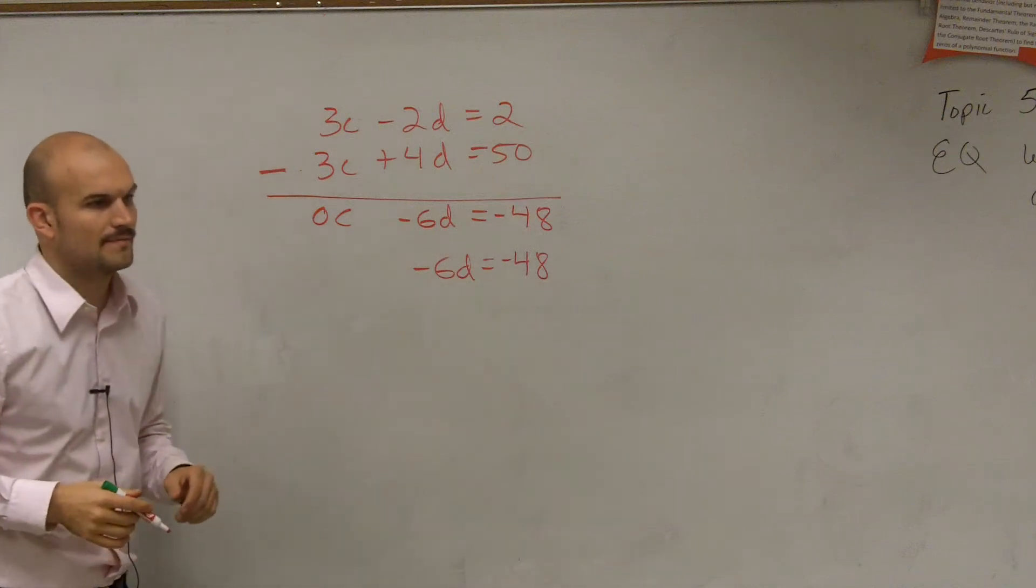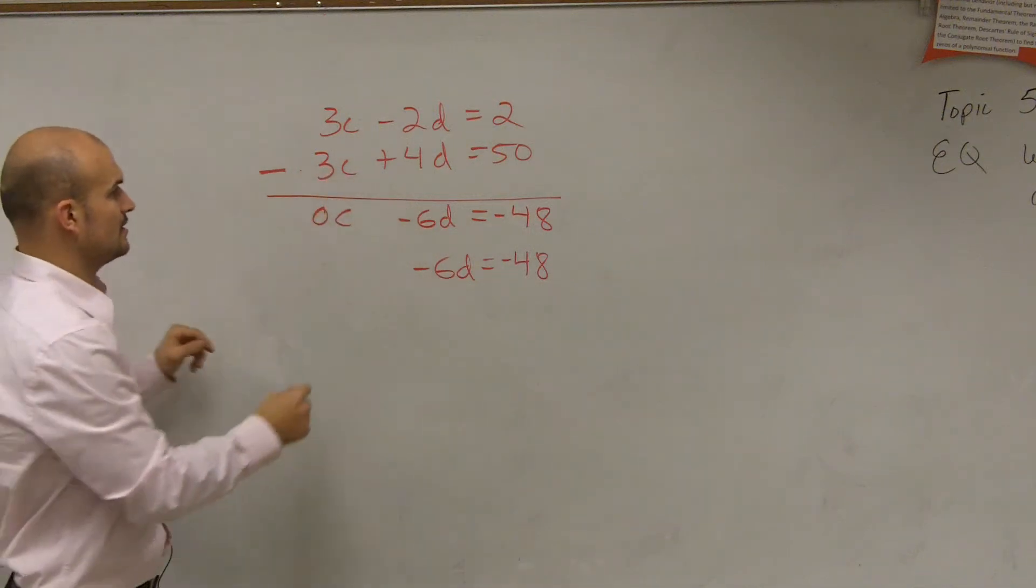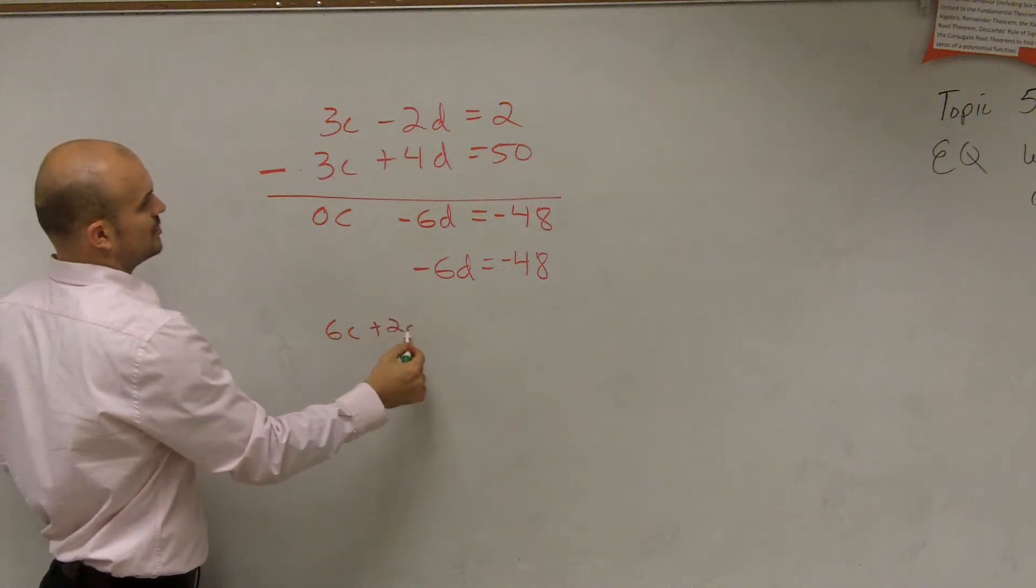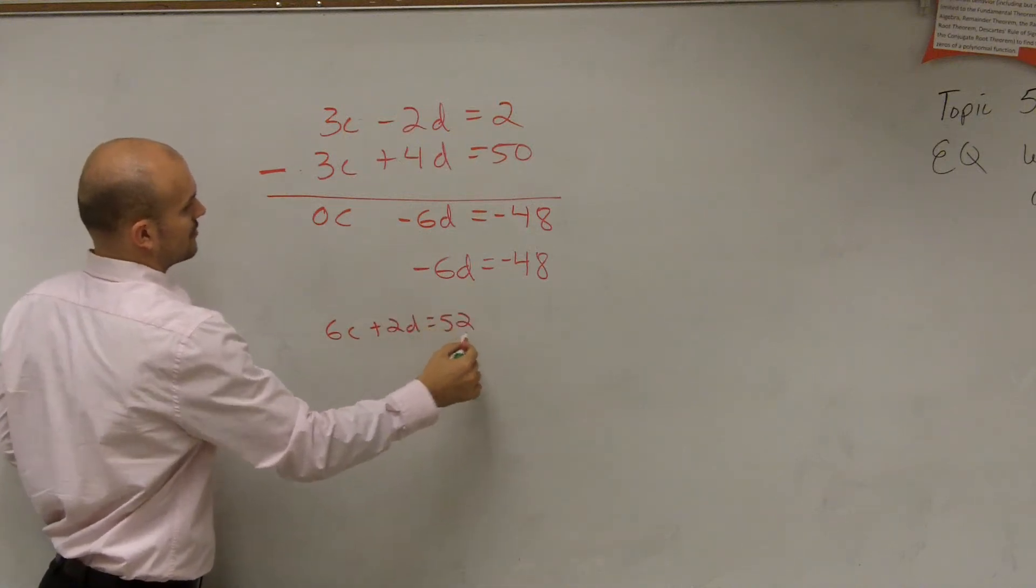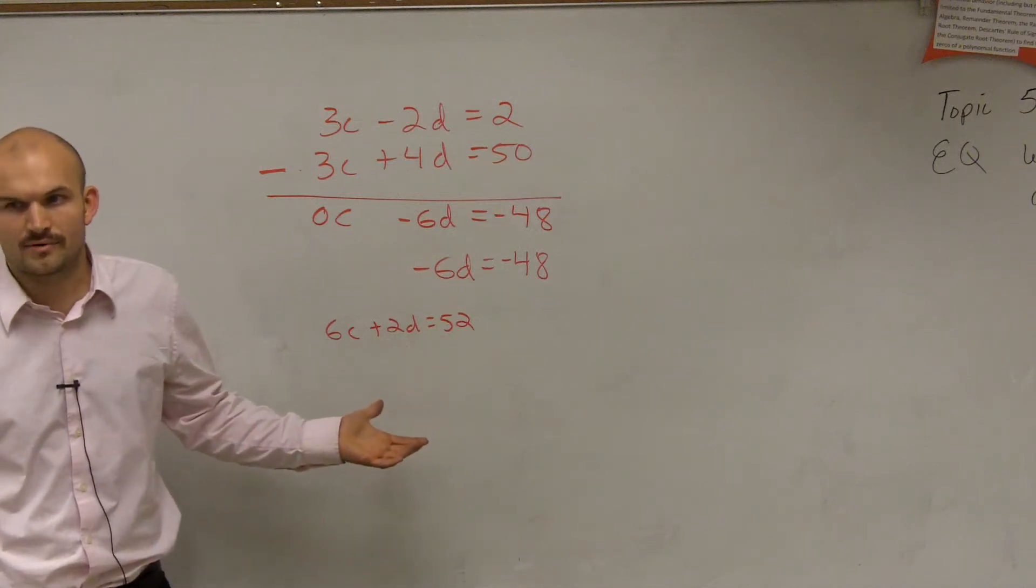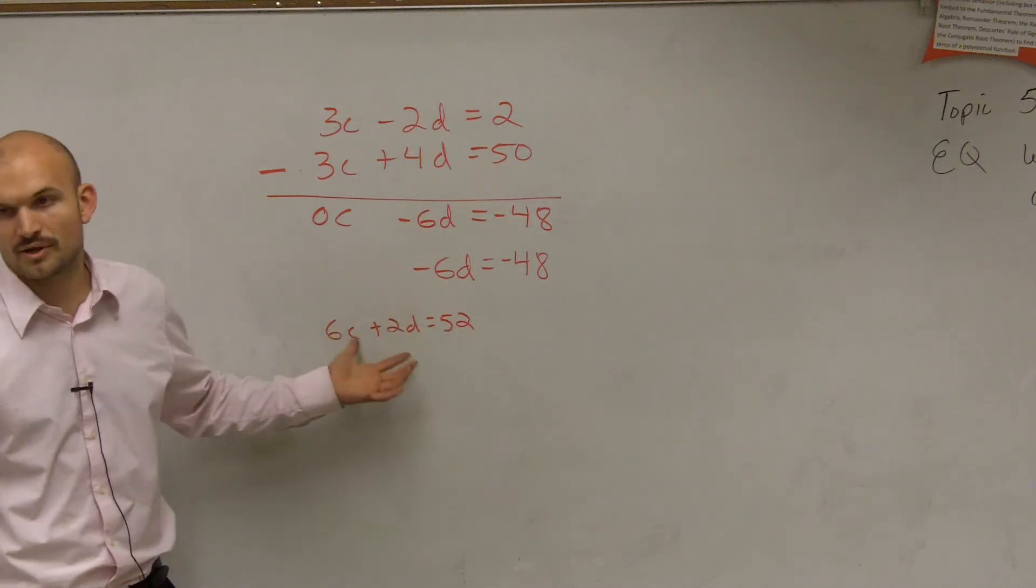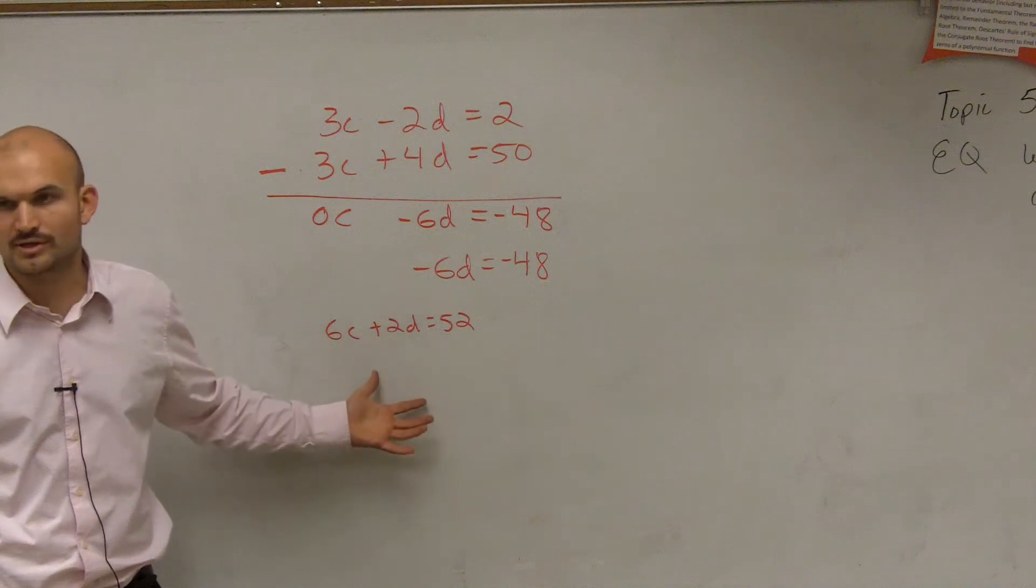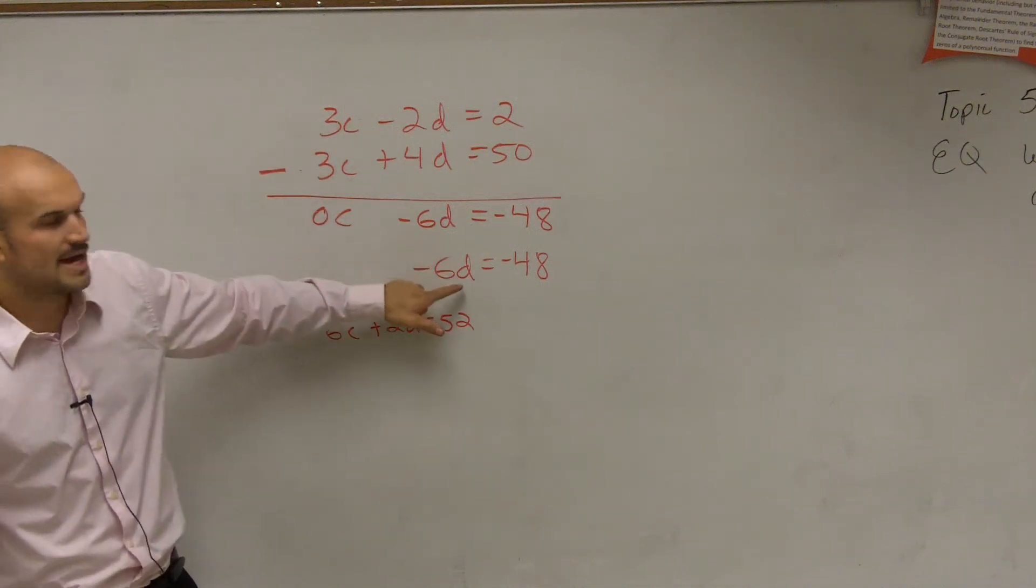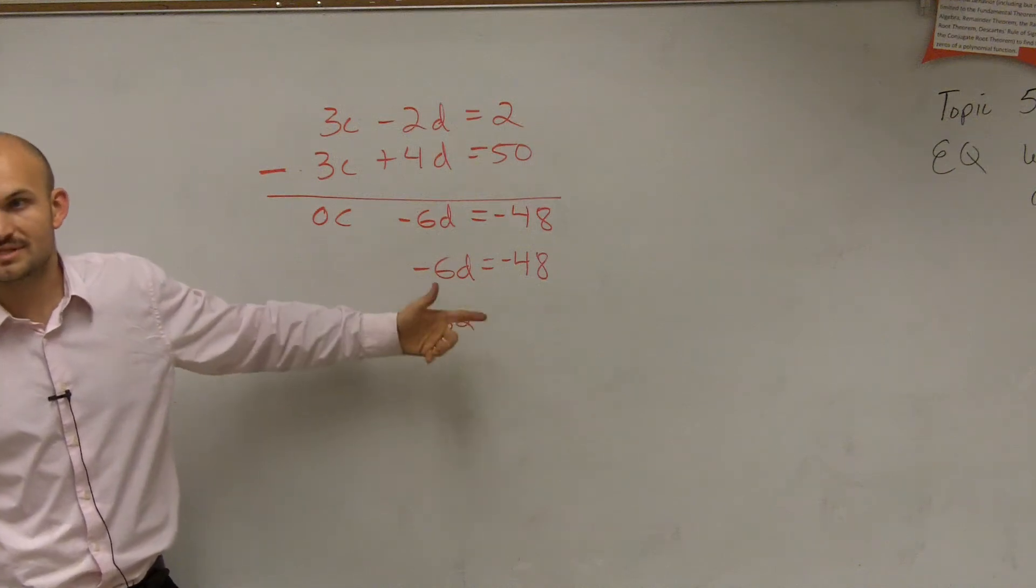Well, here's the important thing. Like I said, if you added it, you would get 6C plus 2D equals 52. Well, what are you going to solve for? You didn't help yourself out anymore. You can't solve for one of those variables because you still have another variable in the equation. But when I eliminated a variable, you can see now I only have one variable to solve for. You see how that helps you out?